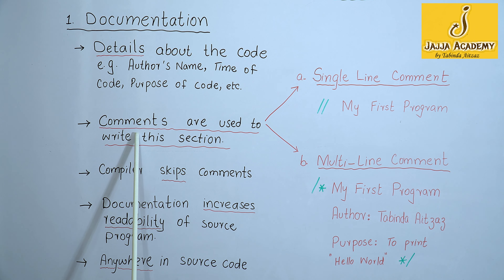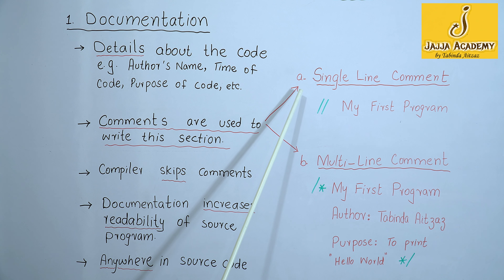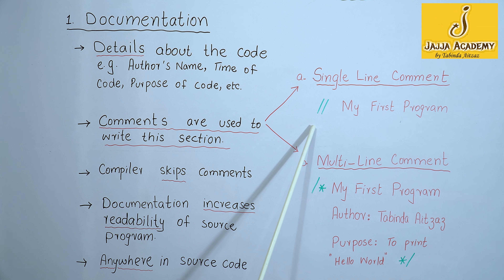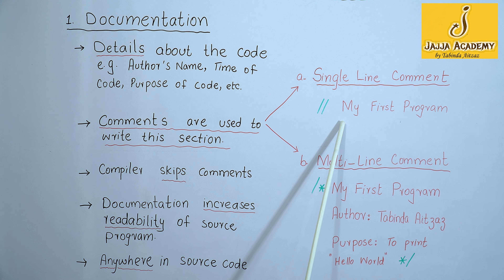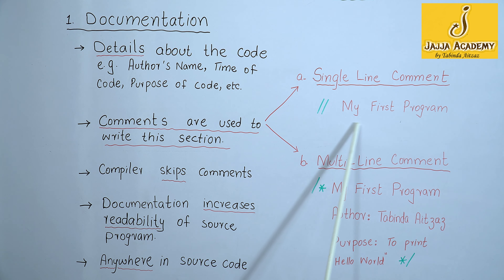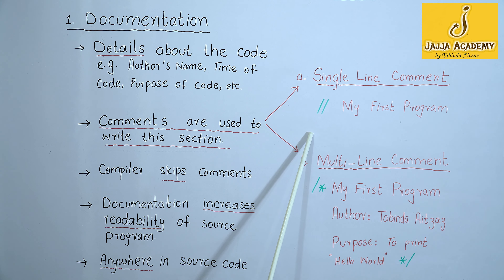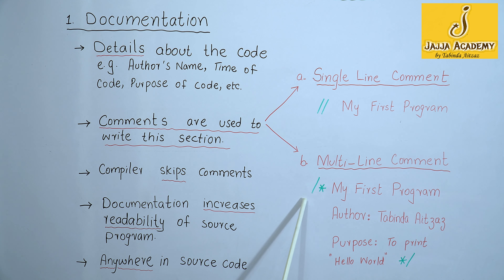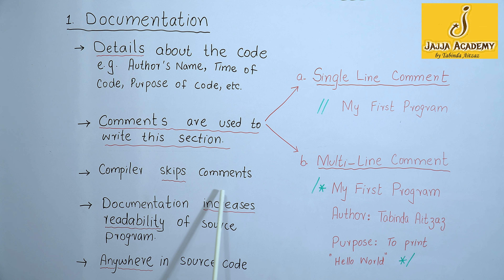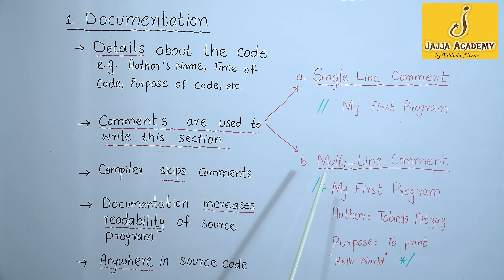What are comments? There are two types of comments: single line comment and multi-line comment. The symbol used to write a single line comment is double slash. If I want to provide the title of my code written in one line, I will use a single line comment. But if I want to provide more detail about my C code, I will use a multi-line comment. Multi-line comment starts with slash-asterisk and ends at asterisk-slash. The compiler skips comments.